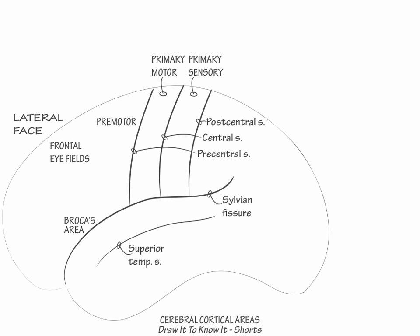Then peel back the superior temporal gyrus, and within the transverse temporal gyri, Heschl's gyri, label the primary auditory cortex, Brodmann areas 41 and 42. Next, within the posterior superior temporal gyrus, label Wernicke's area, the language reception area, Brodmann area 22.